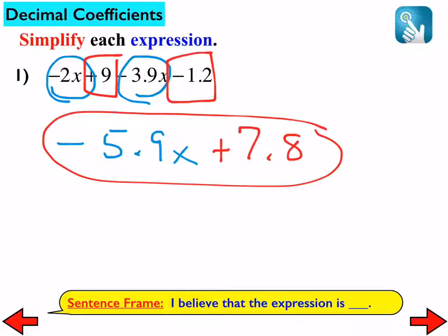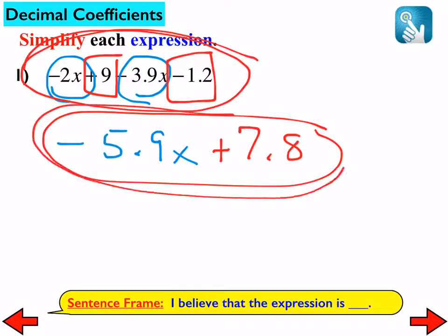So that means negative 2x plus 9 minus 3.9x minus 1.2 simplifies to negative 5.9x plus 7.8. Now one of the other things I stated yesterday was this. The original expression here and this expression are equivalent to each other. The difference is the original one was not simplified. The one that we found that we're calling the answer, that is the simplified version of the original one. But they still are both equivalent to each other. I would like everybody to do number 2, 3, and 4.